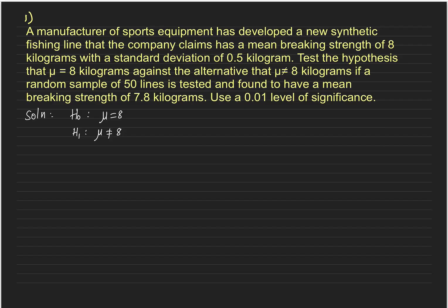Let's recollect the steps involved in hypothesis testing. First we need to formulate the hypothesis — we've done that. Next, identify the level of significance, which is given as 0.01. We also need to find the appropriate test statistic. The givens in this problem are: standard deviation is 0.5, sample size n is 50, and sample mean is 7.8.